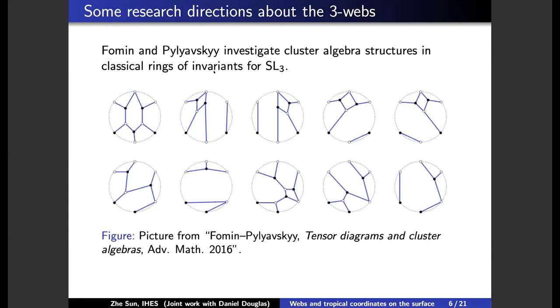And another research direction is by Fock and Goncharov. They investigated the cluster algebra structure of classical invariant rings of Vinberg-Kuperberg. It's also related to the work of Kuperberg. And then they find the basis webs to parameterize these tensor invariants. And this is an example of Grassmannian G(2,4).